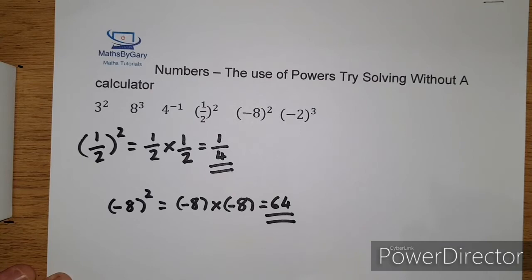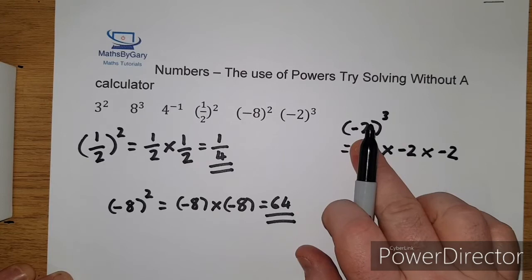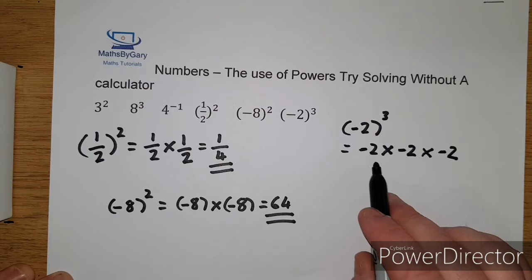Now the last example we have, we have to be a bit careful because it's minus 2 cubed. Now what we have here is minus 2 times minus 2 and then times minus 2 again. So when we're using powers and it's a negative number we have to be careful because the sign is very important.